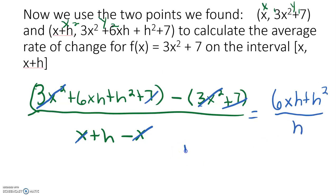I factor out the GCF of h, which leaves me with 6x plus 3h all over h. The h reduces to 1, leaving us with 6x plus 3h.